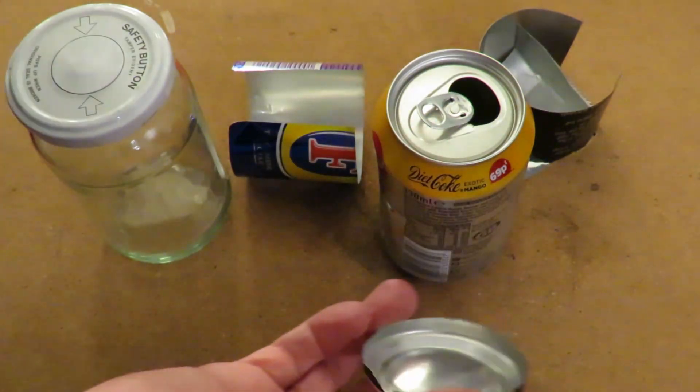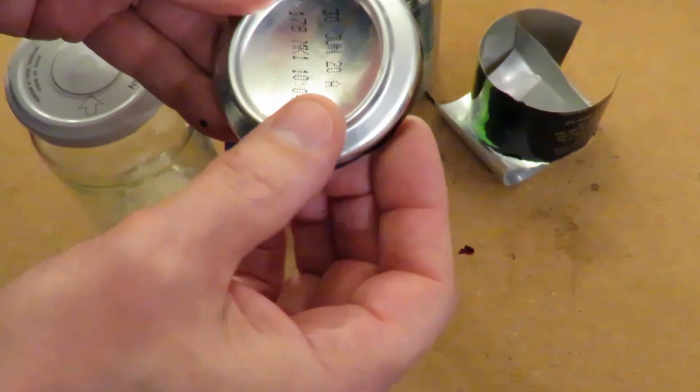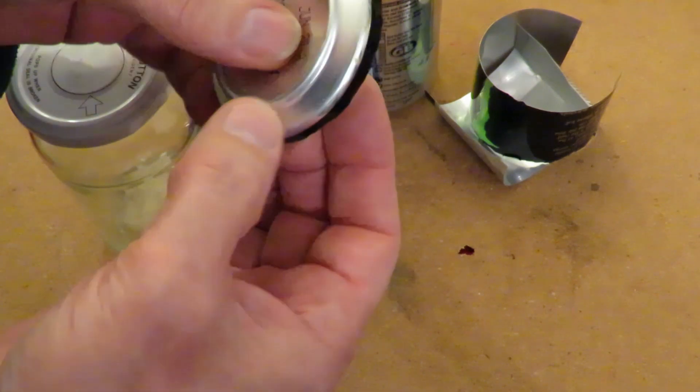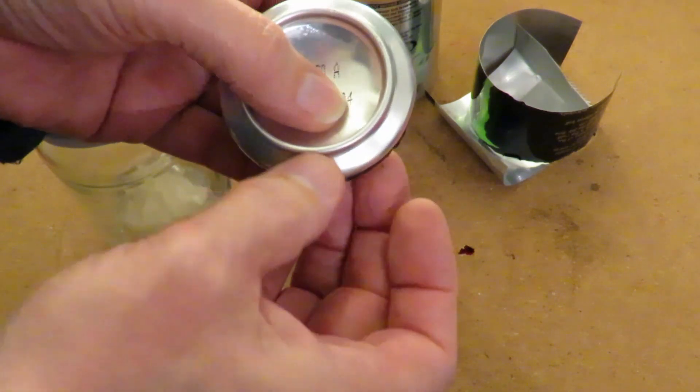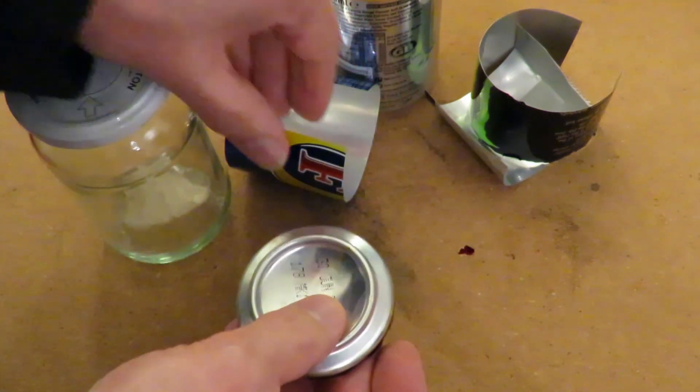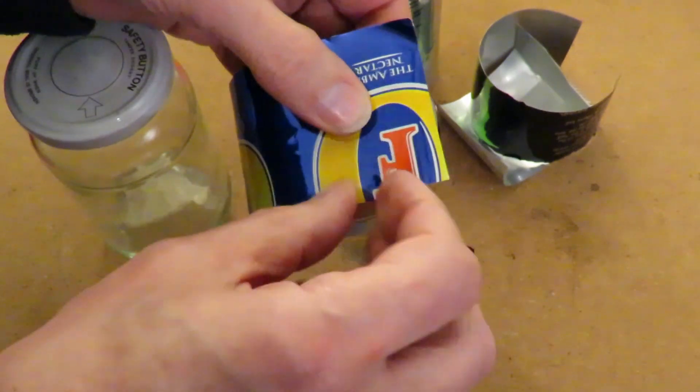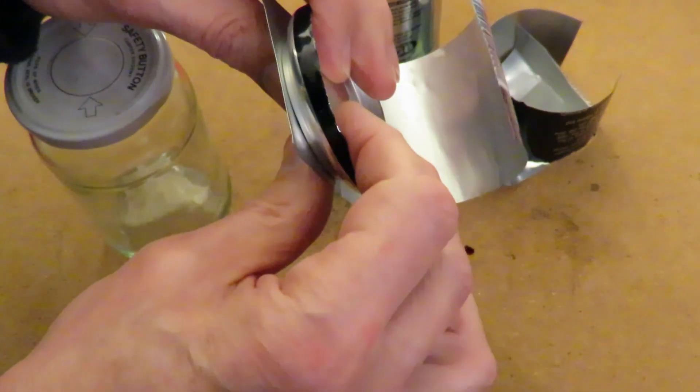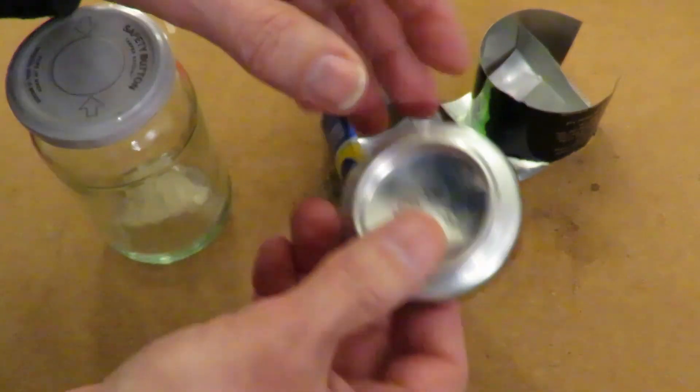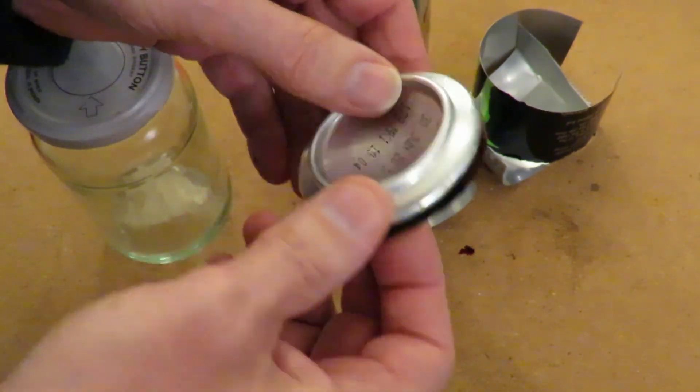What we've got there is the bottom of a can. I saw a video where somebody cut little petals all the way around and folded it over to make the seal, and then sealed it with two-part epoxy because soldering aluminium is not easy.